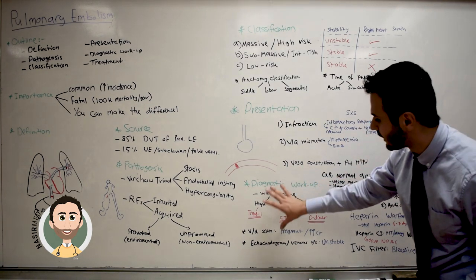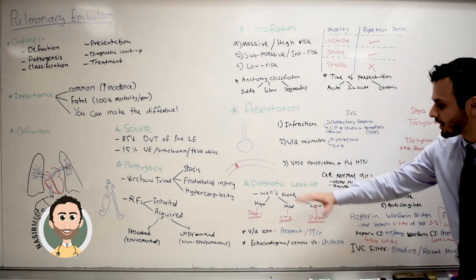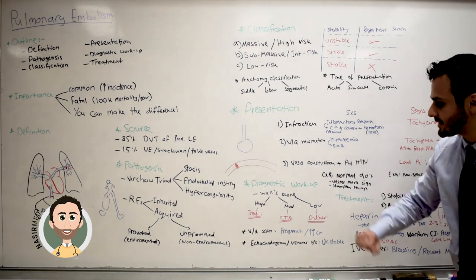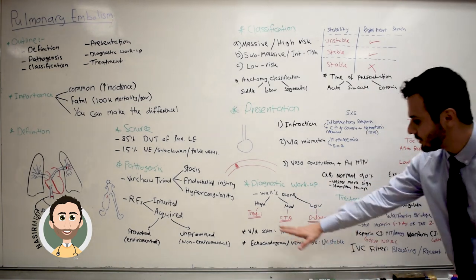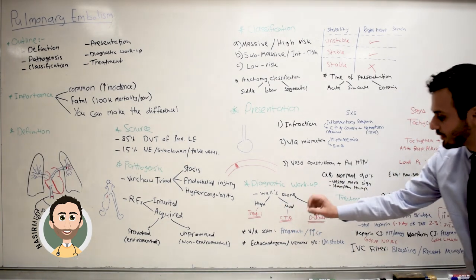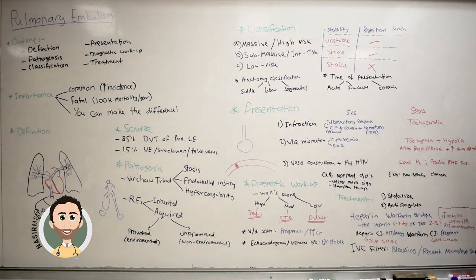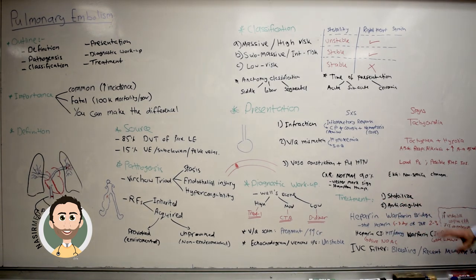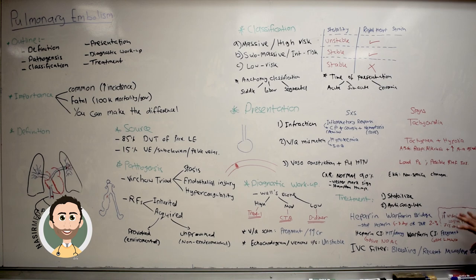We also talked about the clinical signs and symptoms based on mechanism of action, and the diagnostic workup — starting with Wells criteria, categorizing into high, medium, or low suspicion, and what to do based on that. Then we ended with treatment: stabilize the patient first, then anticoagulate, or start TPA thrombolytic therapy if the patient is unstable.